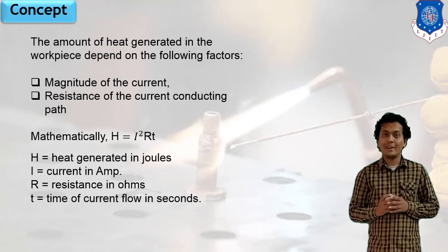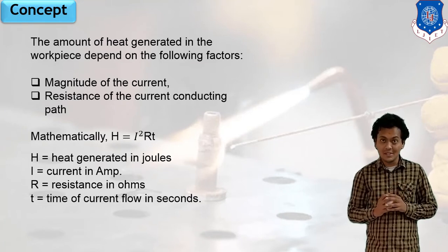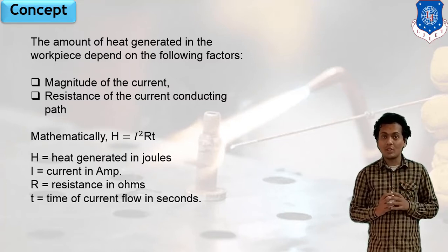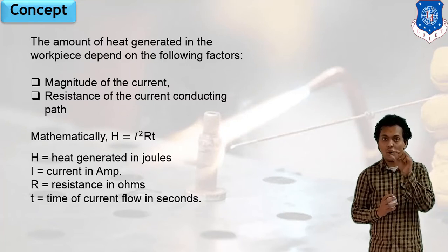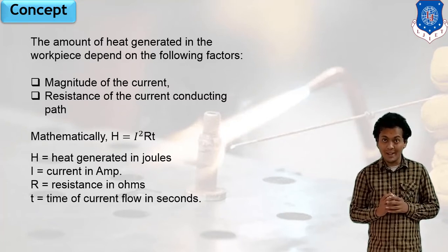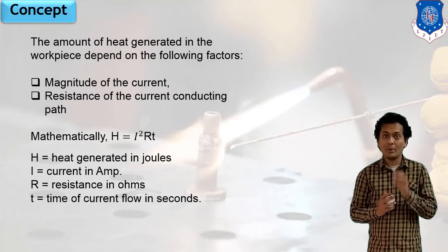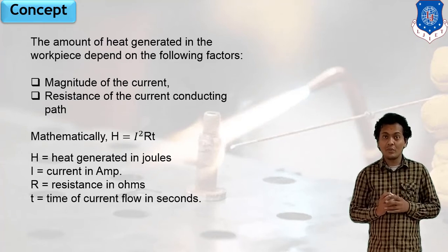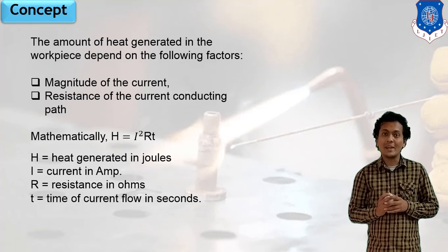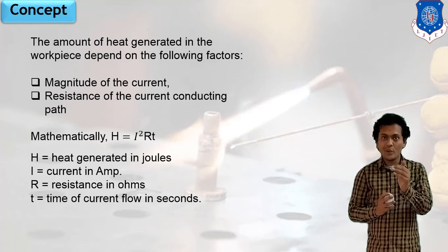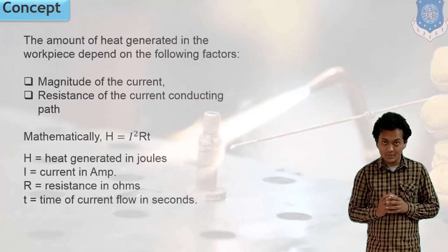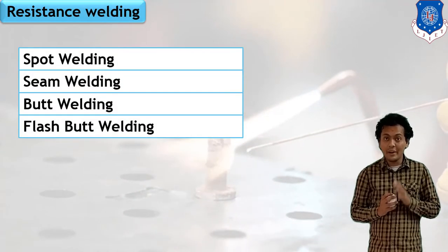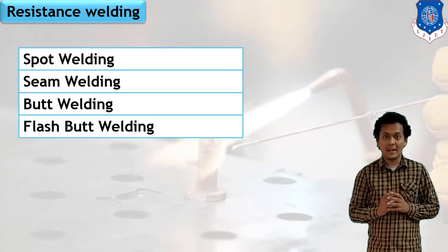For example, if you want to join two plates with help of this resistance concept, we switch on the current, and with help of resistance between two electric rods heat will be generated and a joint will be made at that particular point by passing the current for a particular time duration. This is how we can understand the concept of resistance welding. After that, let us start our discussion on different types under the category of resistance welding.